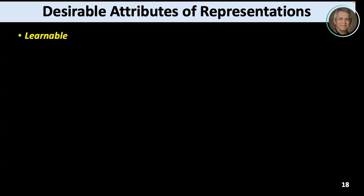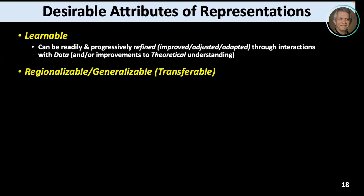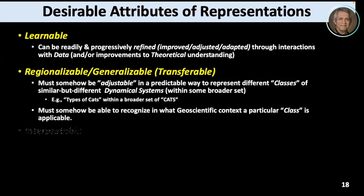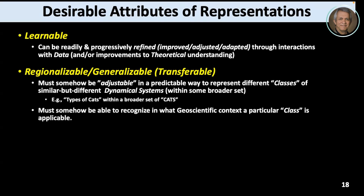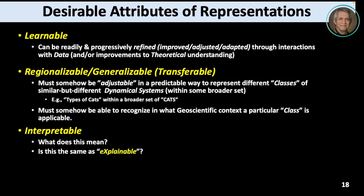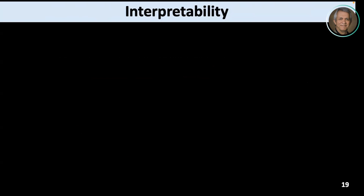Some desirable attributes: we want representations to be learnable, regionalizable, and generalizable. The illustration I like is to think of catchments as dynamical systems — like cats. The behavior of one type of cat might differ from another, but they're all in the category of cats. You want to be able to predict that this cat will behave differently from that cat. We must somehow recognize a particular class or subclass. We also want the representation to be interpretable. Is interpretability the same as explainability? My claim is no. And what's the relationship to reasoning?